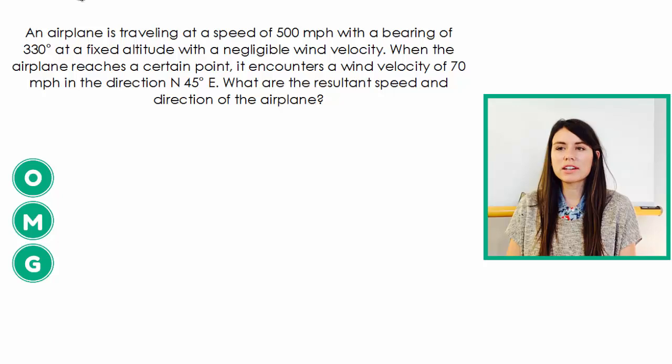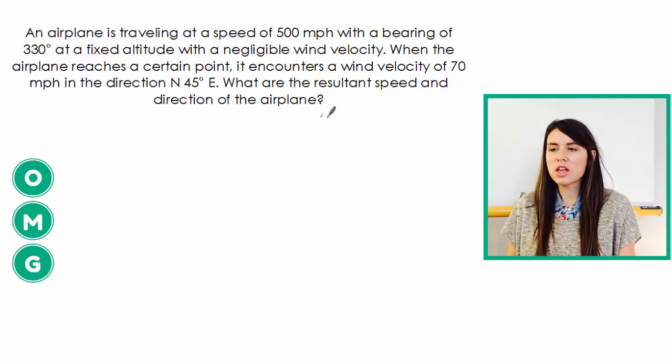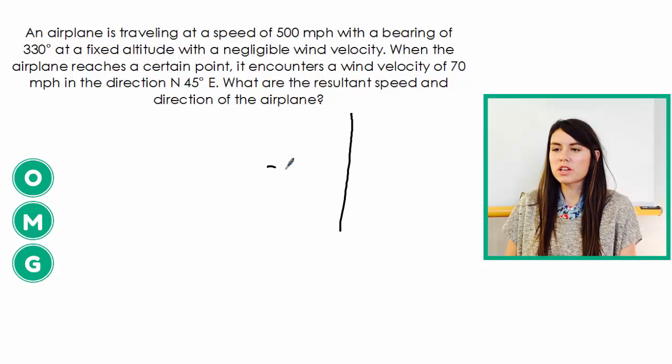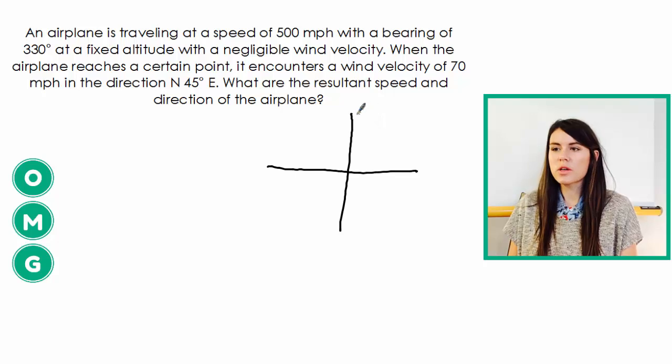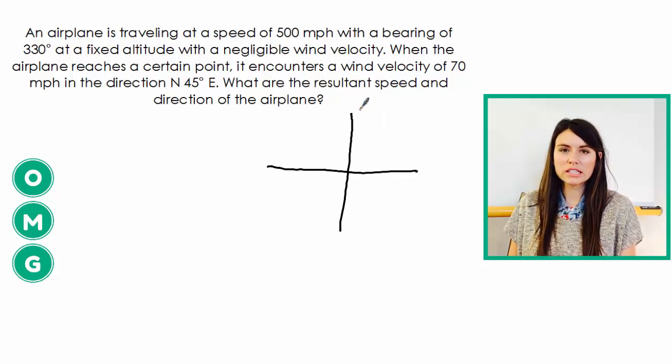So when we talk about vectors and resultant, let's kind of draw what's happening here. So you have an airplane and it's traveling. I'm going to do the airplane in this pink color. It's traveling 330 degrees. So when we give bearings or north east, that's on the compass, not the unit circle.